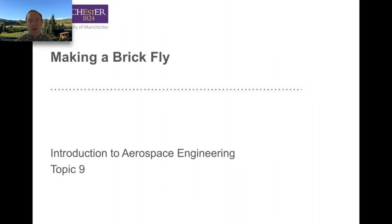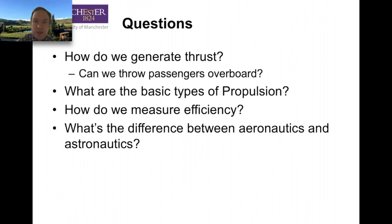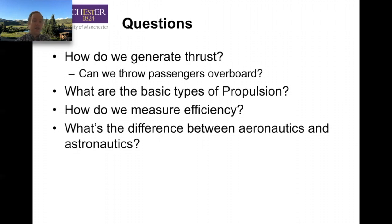In this video, we're going to cover efficiency and all the different measures of efficiency. We've already talked about how we generate thrust — we realized that while we can throw passengers overboard, i.e. provide momentum shifted out the back, it's probably not a wise idea. We've talked about the basic types of propulsion, including piston props, jets, ramjets, turbojets, turbofans, scramjets, and rockets, both chemical and electric. We'll talk about a few more at the end of this video, and we're now going to talk about the measures of efficiency. I've wanted you to think about the differences and similarities between aeronautics and astronautic propulsion systems, and we'll talk more about these as we get into our efficiency metrics.